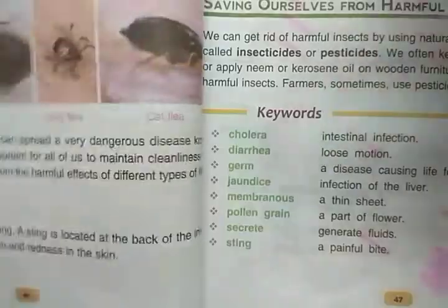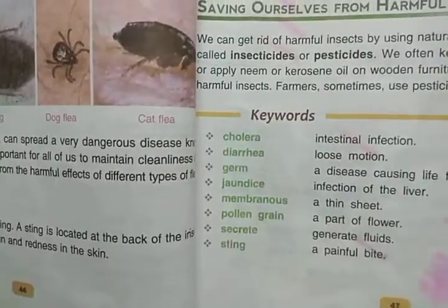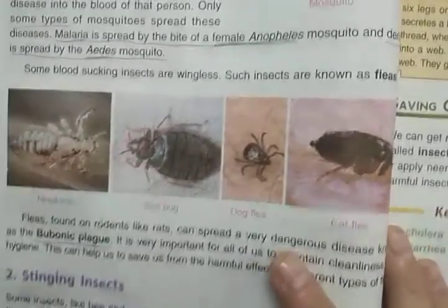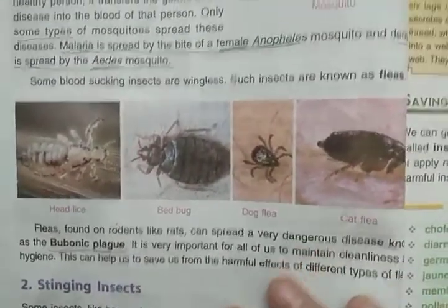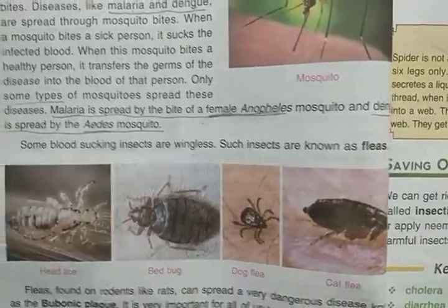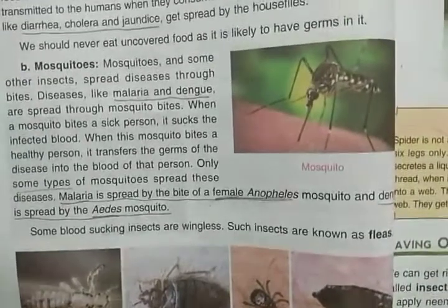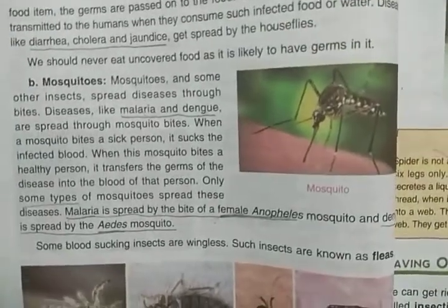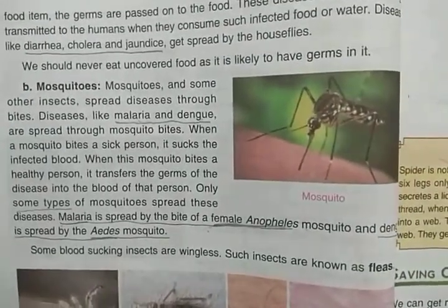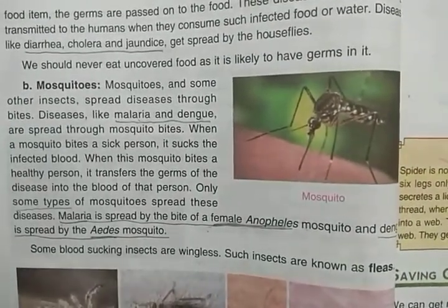House flies spread diseases like diarrhea, cholera, and jaundice. Then we have revised about the mosquito — how they are harmful.